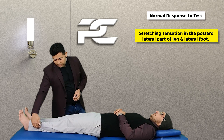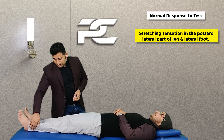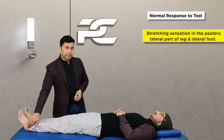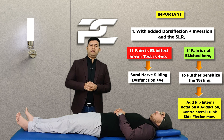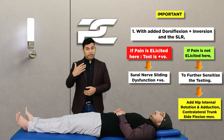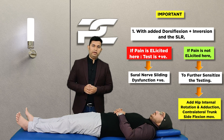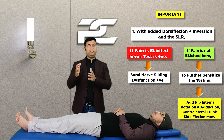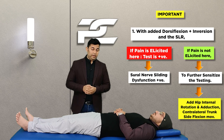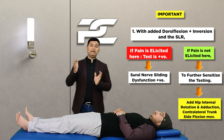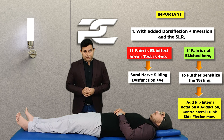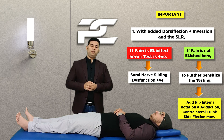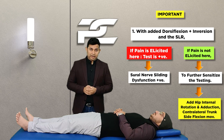The normal response to the sural nerve mobility testing is a stretching or pulling sensation along the posterolateral part of the leg and the lateral part of the foot. The sensitizing movements — hip internal rotation or hip adduction — should only be utilized by the therapist if the standard testing does not reproduce the patient's symptoms.